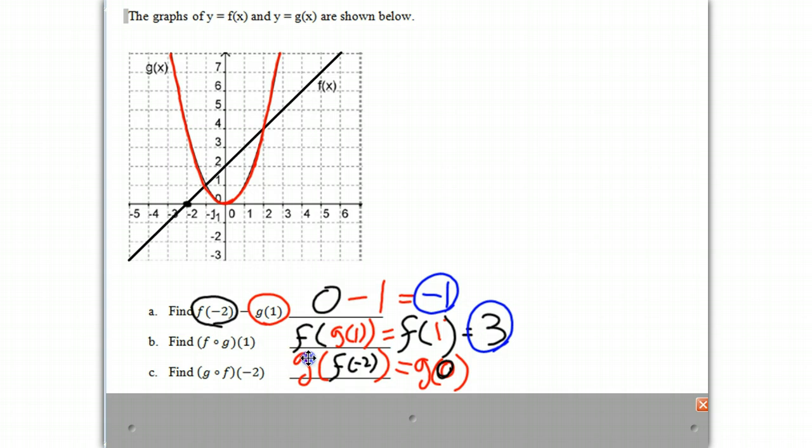And g of 0, we simply look when x is 0, what is the value of g? And you might notice that it's right there at the origin. So when x is 0, y is 0. So g of 0 becomes 0. And that is our answer.